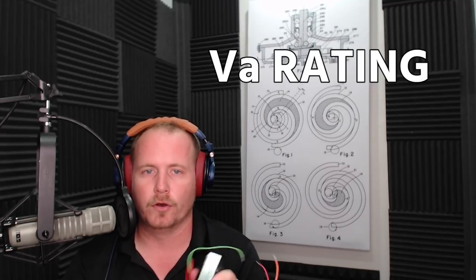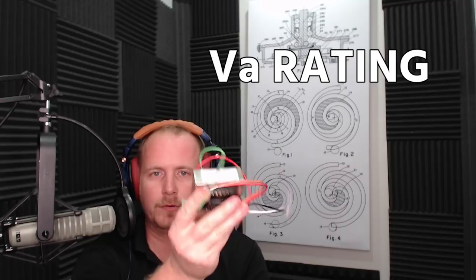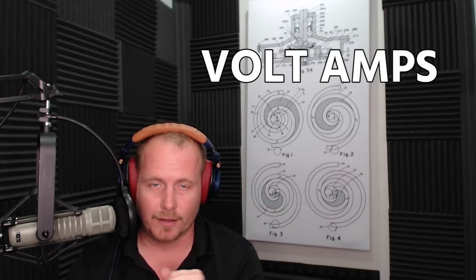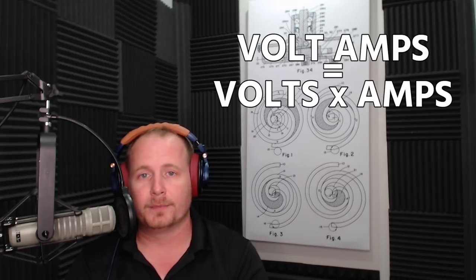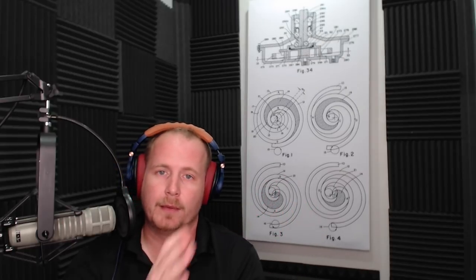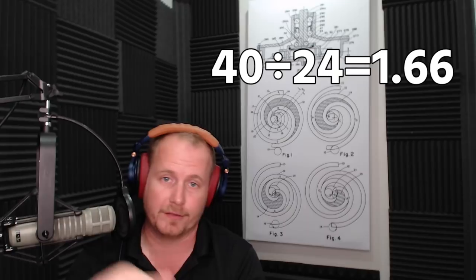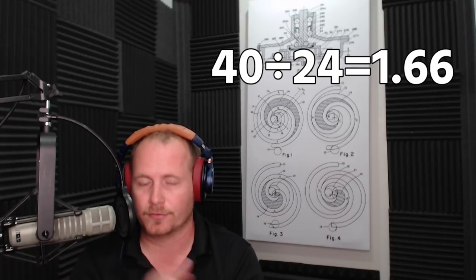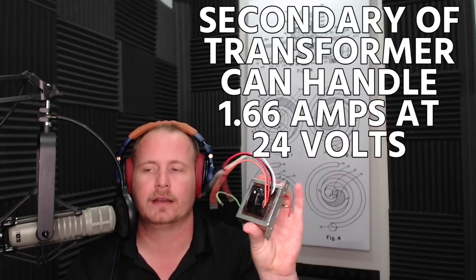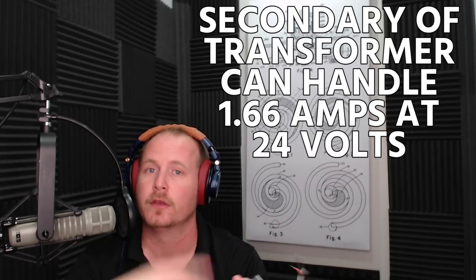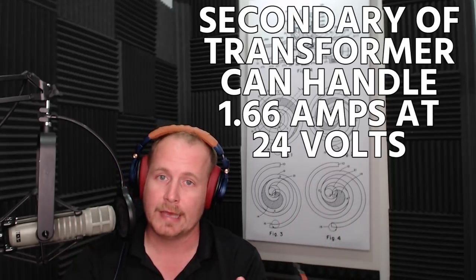But what I wanted to talk about most of all is this rating on the transformer, this rating of VA. The VA rating stands for volt amps. I did a podcast on this as well. Volt amps means volts times amps. So if you have a 40 VA transformer like this one is, that means 40 volts times amps. If it's a 24 volt primary, then you take 40, you divide it by 24. 40 divided by 24 equals 1.66. And so that means that the secondary of this transformer can handle 1.66 amps at 24 volts. 24 volts times 1.66 equals 40 VA.